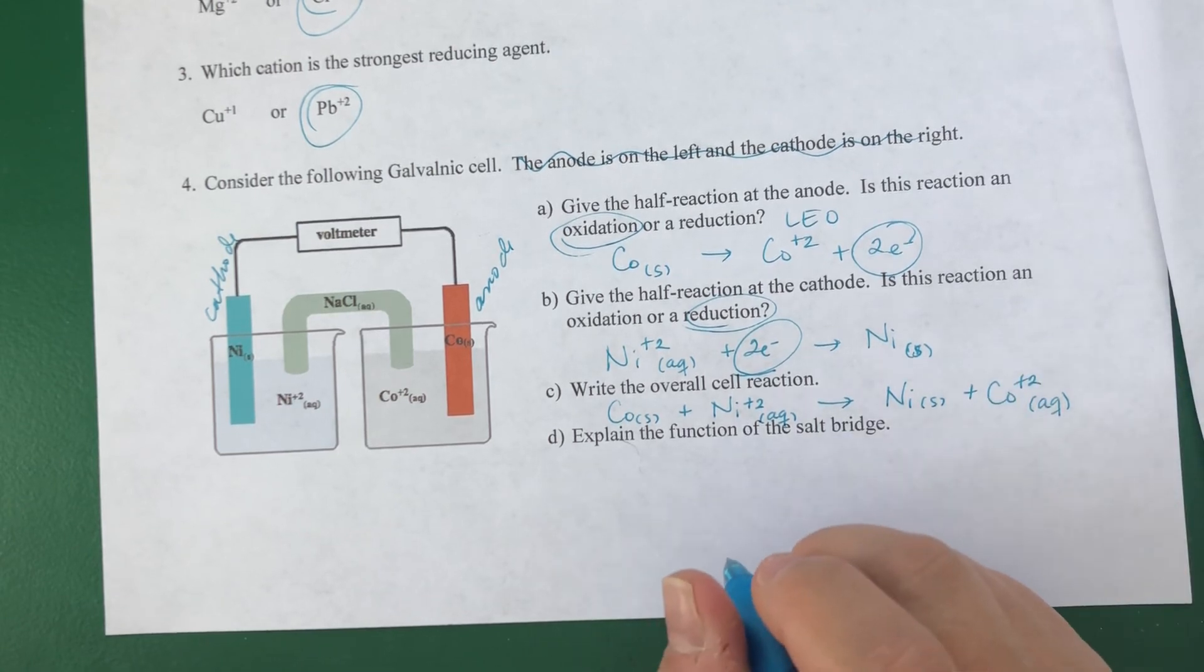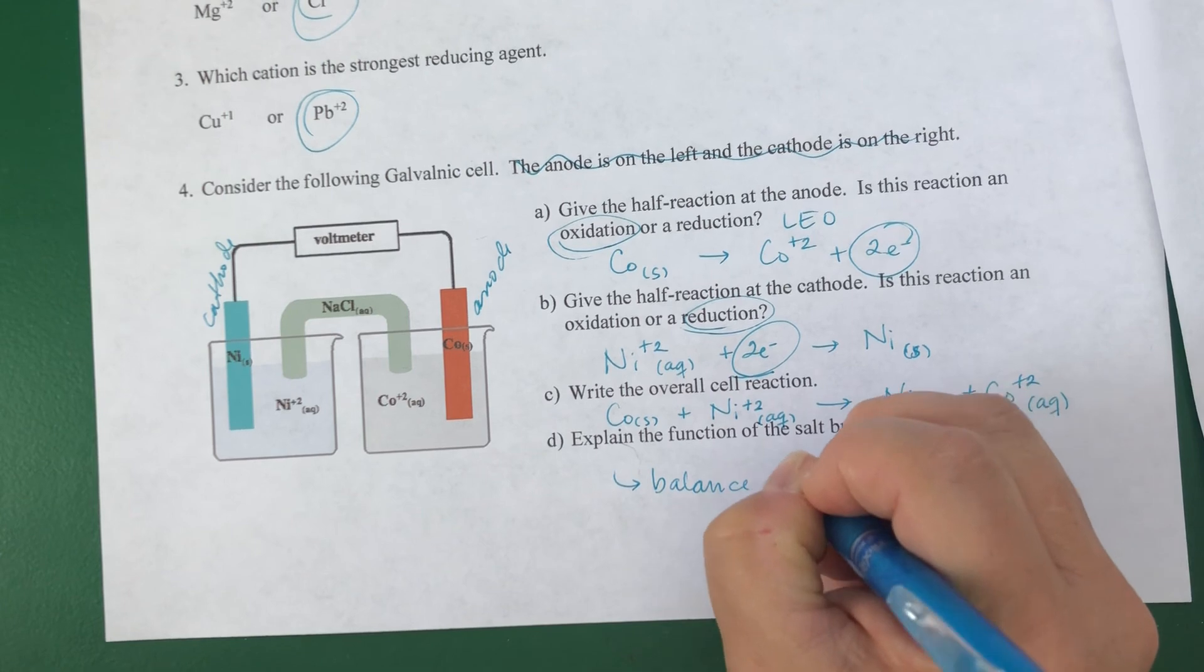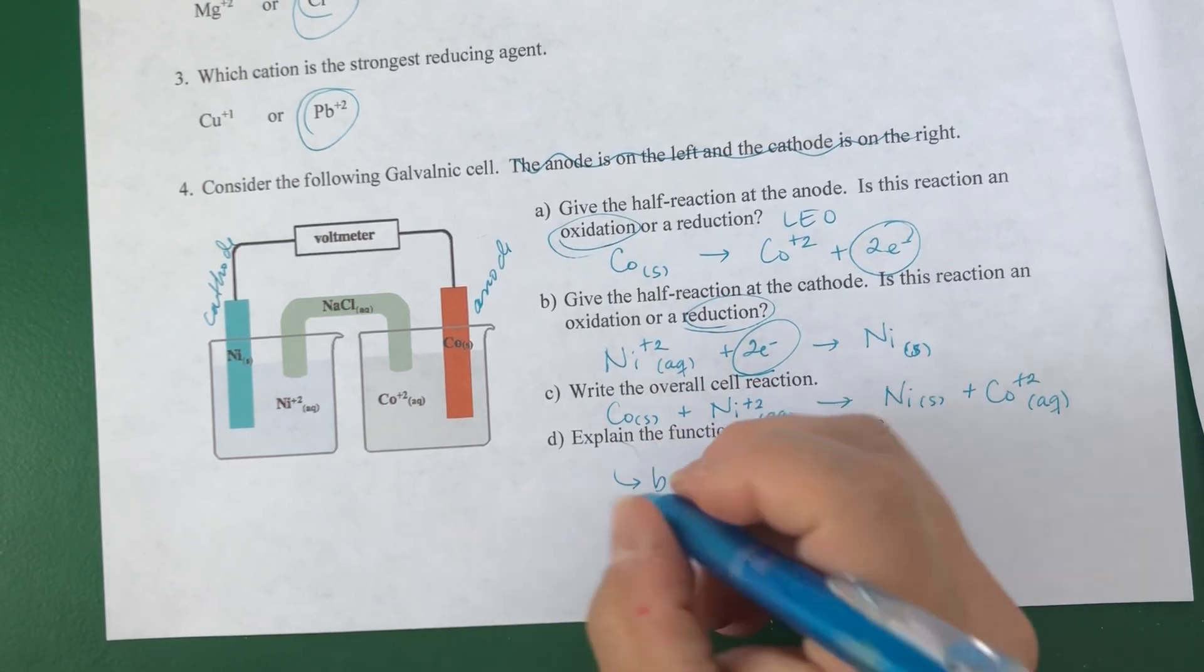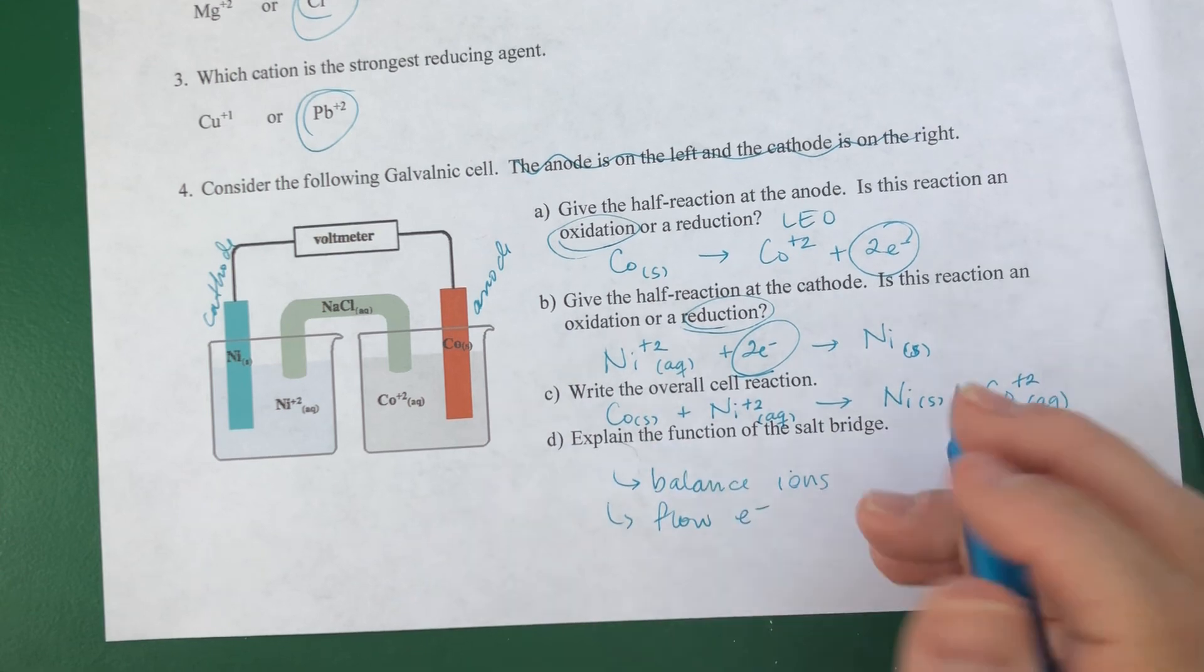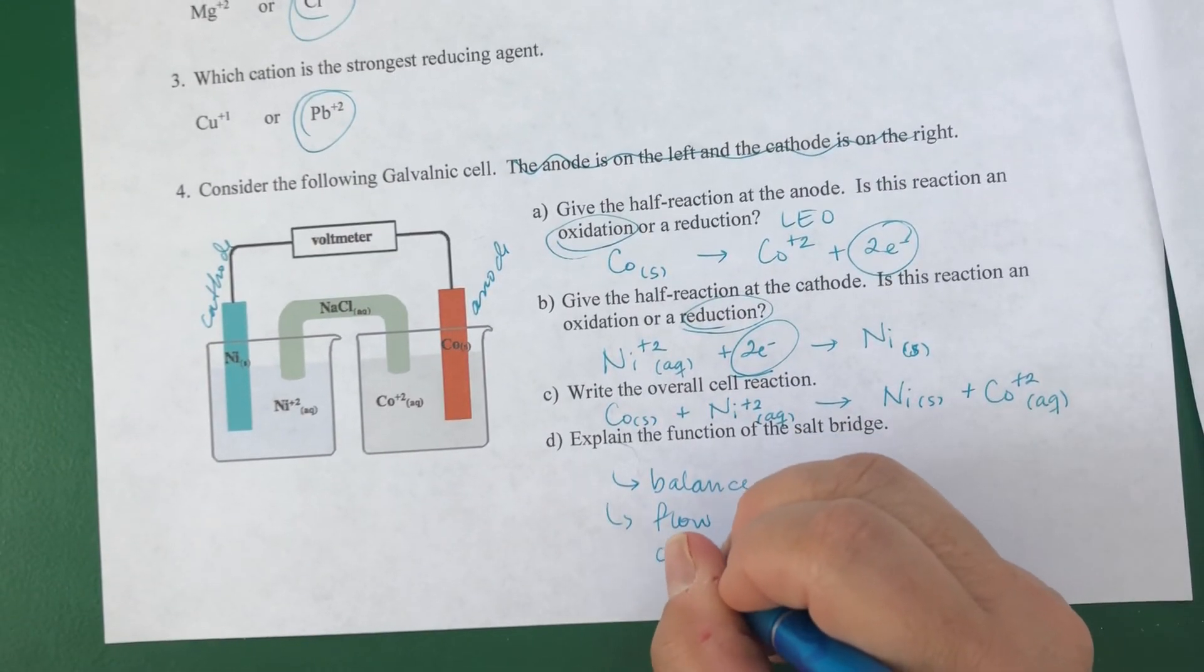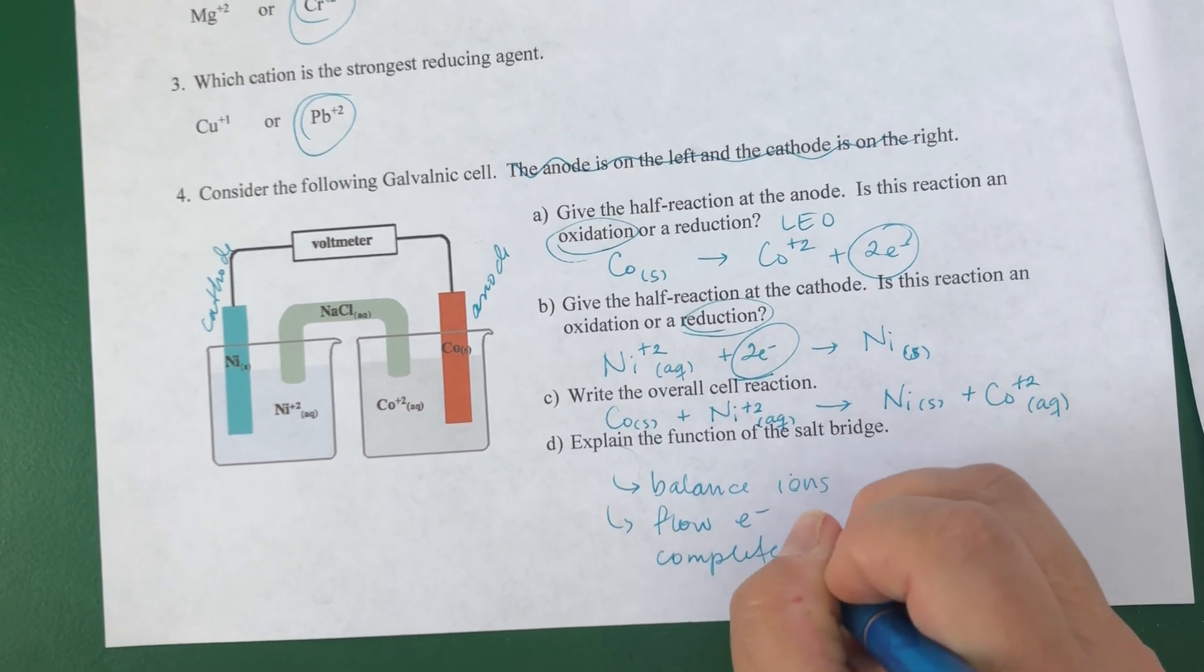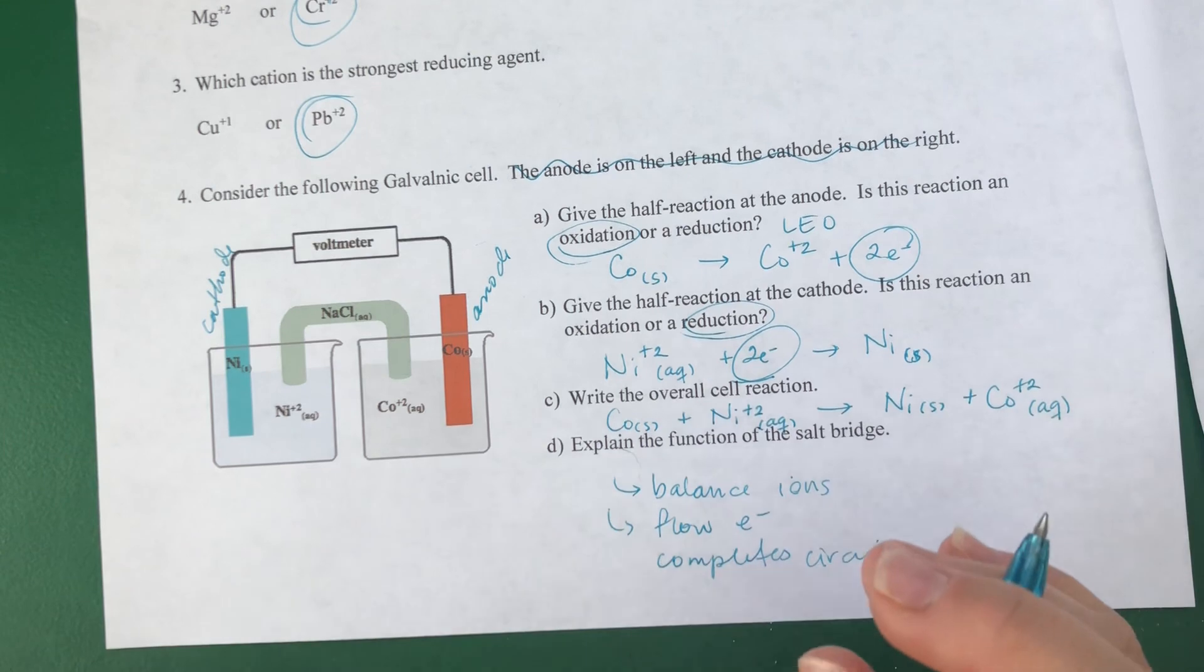Explain the function of the salt bridge. The salt bridge is meant to balance ions in the cell, allows the flow of electrons, right? It completes the circuit. Without the salt bridge, you wouldn't see any voltage on the voltmeter. You wouldn't get a flow of electrons. Well, I hope this helps.